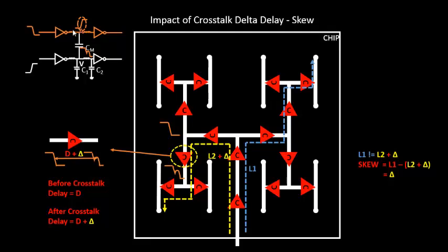What happens is the signal tries to charge and then gets discharged again, causing a bump, which introduces a delta delay in the logic 1 to logic 0 switching. The delay of this cell changes from D to D plus delta. If this clock cell was part of path L2, the latency that was supposed to be L2 is now L2 plus delta. So the skew becomes L1 minus (L2 plus delta), which is no longer zero — there is a finite value delta.